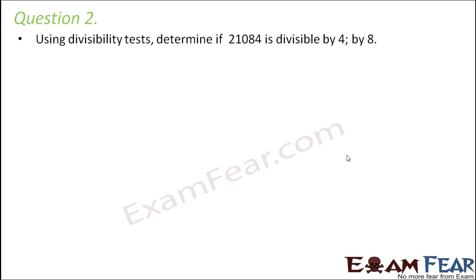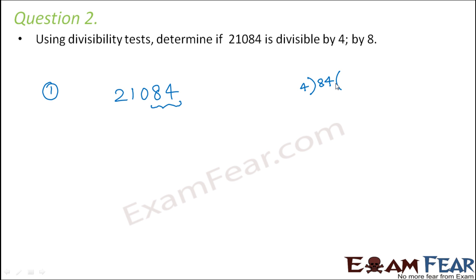Question number 2: Using divisibility tests, determine if 21084 is divisible by 4 and by 8. How do we determine if a number is divisible by 4? The divisibility test of 4 focuses on the last two digits. If the last two digits are divisible by 4, then the entire number will be divisible by 4. We check the last two digits and get a remainder of 0, so the last two digits are divisible by 4. Therefore, this number is divisible by 4.